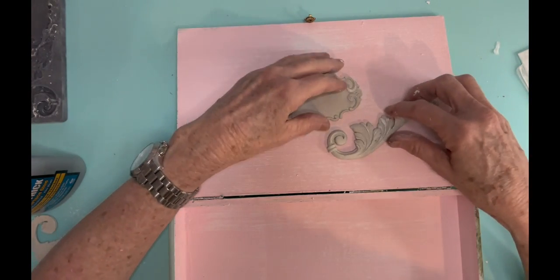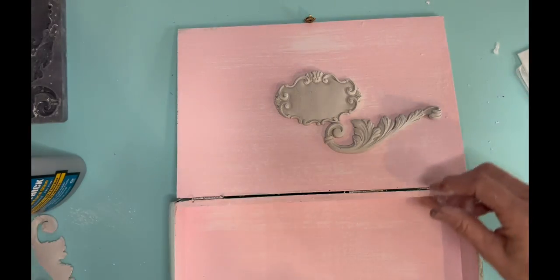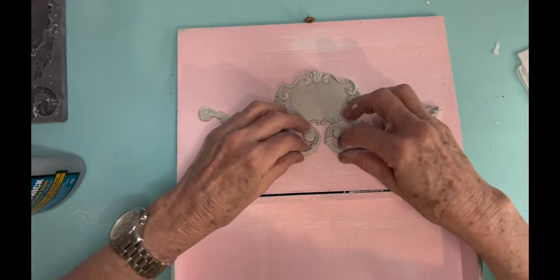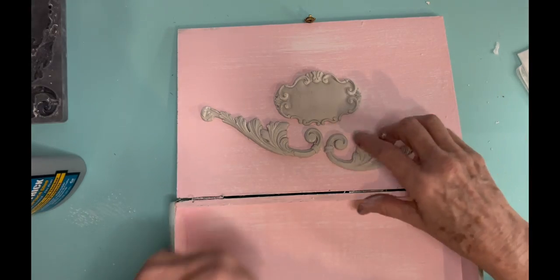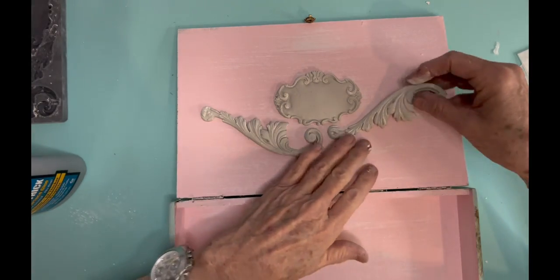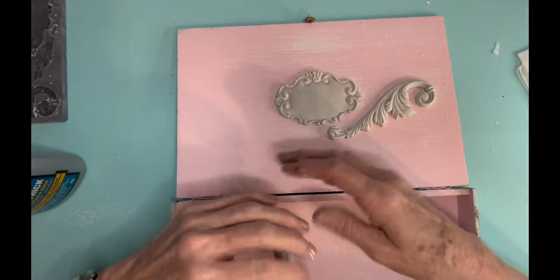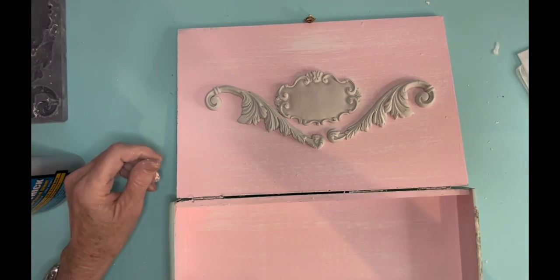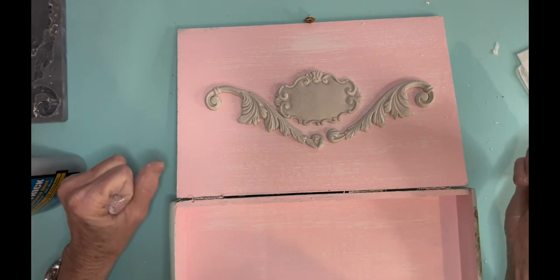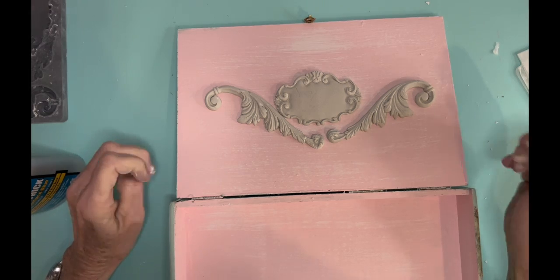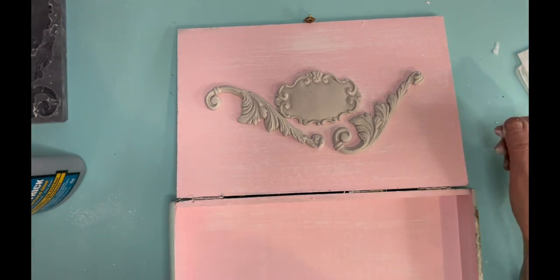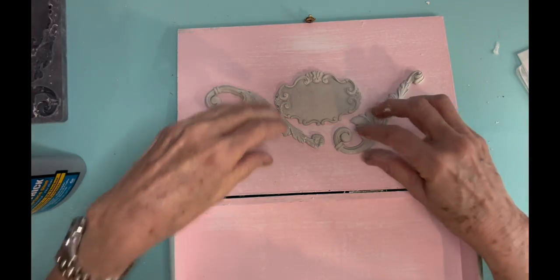I'm just kind of moving it around until I'm happy with how it looks and the way that I want the little swirly parts to go. There might be a technical word for those, but I'm just going to call it swirly things. Then I'm going to take it off and paint it white, and then I'll glue it back on with tight bond glue.